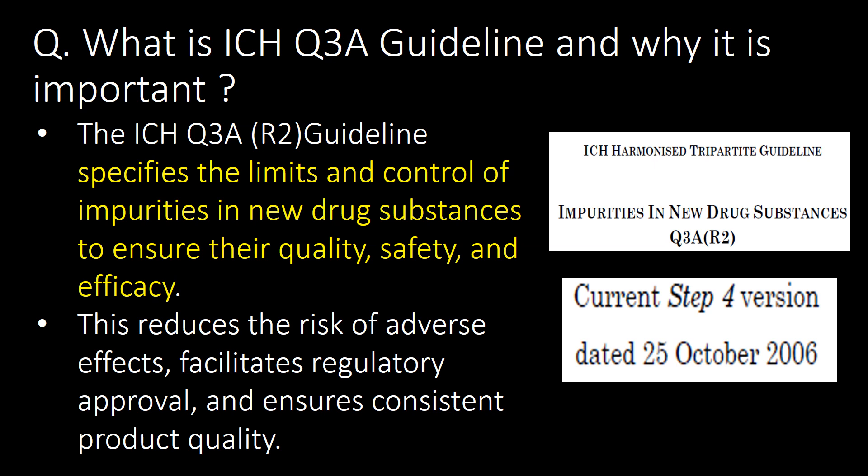ICH Q3A R2 guideline, current step 4 version dated 15th October 2006, is the guideline which specifies the limits and control of impurities in new drug substances to ensure their quality, safety and efficacy. This reduces the risk of adverse effects, facilitates regulatory approval and ensures consistent product quality.